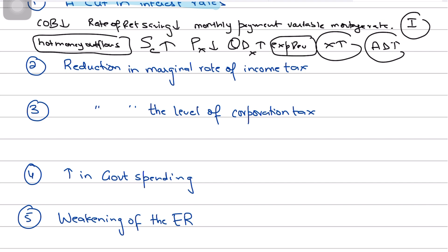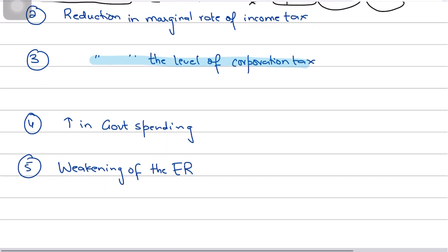The third factor is that the government could reduce the level of corporation tax — taxes on business profits. This would increase retained profits for businesses, making it easier for them to finance investments. The marginal propensity to invest would go up, and as investments go up, aggregate demand will increase since investment spending is a component of AD. Real GDP would go up, boosting short-term growth.